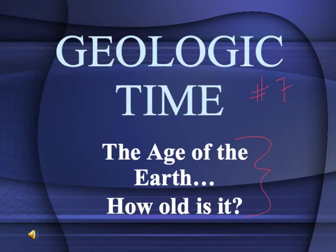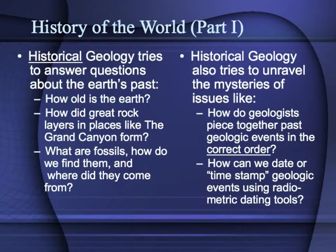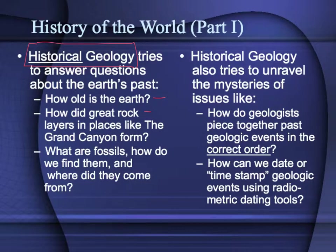Let's start talking about the age of the Earth. Historical geology is a branch of the geosciences that deals with the Earth's past and tries to answer questions about how old is the Earth, how did certain rock layers that we might see at places like the Grand Canyon, Zion National Park, or Bryce get there, and what processes were involved in them being laid down and ultimately eroded.